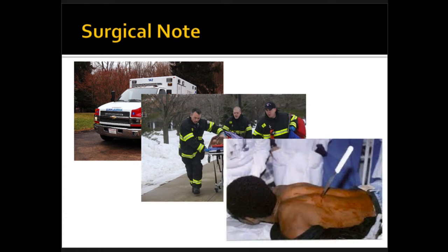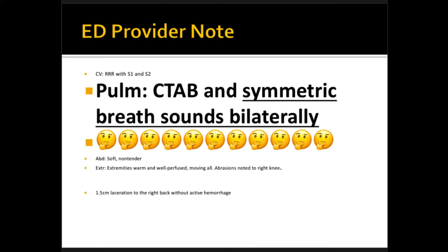C: extremities are warm, good pulses on all four extremities, you're establishing access. D: deformities — the kitchen knife. Exposure: kitchen knife, nothing else.